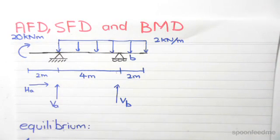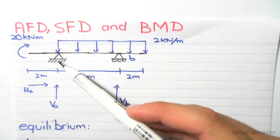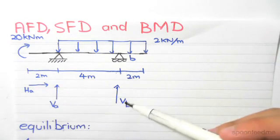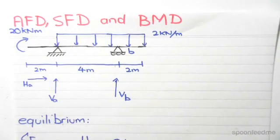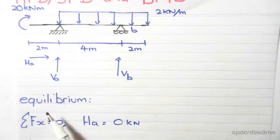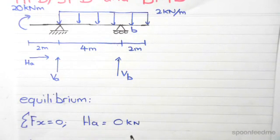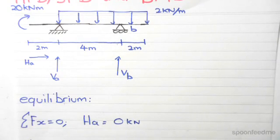The first thing we do is determine how many unknown reaction forces we have. Because this is a pin, we have two unknown reaction forces: one pointing up and one pointing horizontally. We have a roller on the right side, so we only have one vertical reaction force. Using equilibrium, the sum of forces in the horizontal direction shows that HA is the only horizontal force, therefore it equals 0kN. From this we can immediately deduce that the final axial force diagram will just be 0kN.